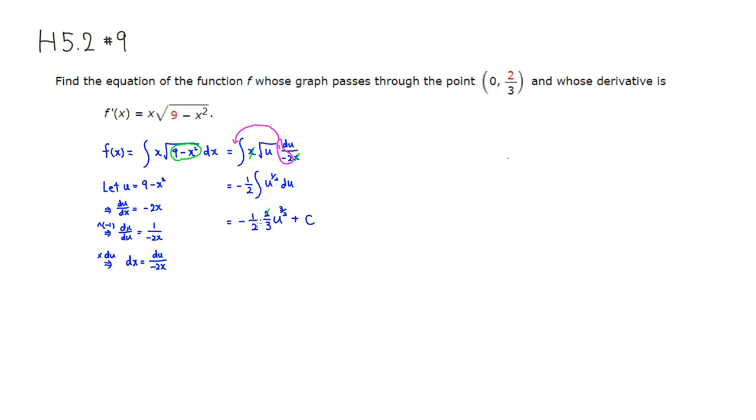There's a 2 on top and 2 on the bottom. We can cancel out. So we're going to have a negative 1 third. I'm going to put the original expression back in, which was 9 minus x squared. And then you have a 3 halves power plus some constant c.